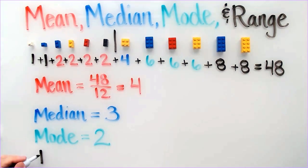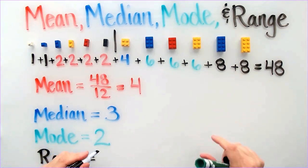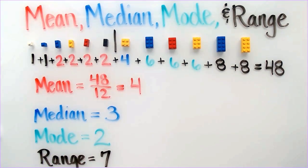Lastly, the range is the difference between the highest and lowest value. The highest value is 8 and the lowest value is 1. 8 minus 1 is equal to 7. This means that the range is 7.